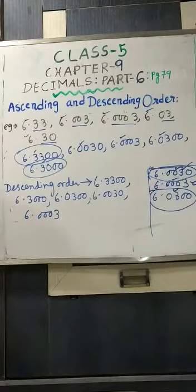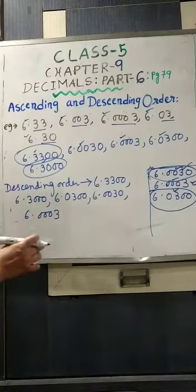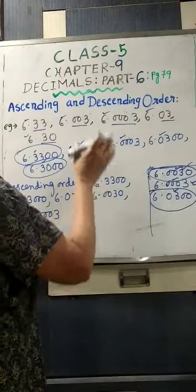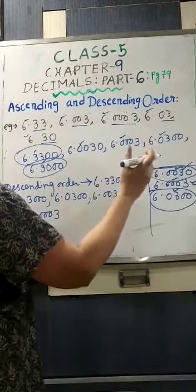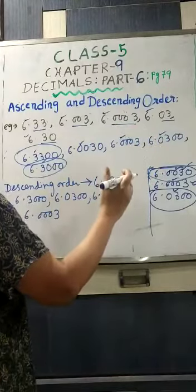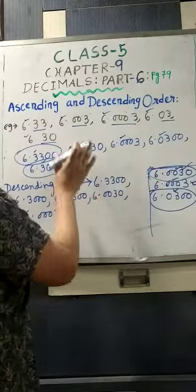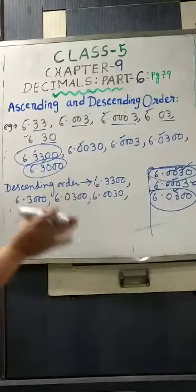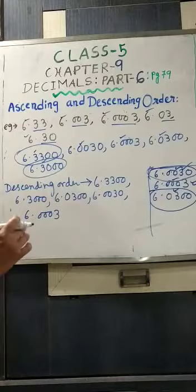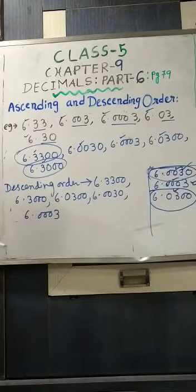Students, I hope you have understood. You have to make the numbers into the same number of digits after the decimal point, by adding zeros after the last decimal digit. Then you arrange them according to ascending or descending order. So students, today up to this much. In our next class, we shall meet again.